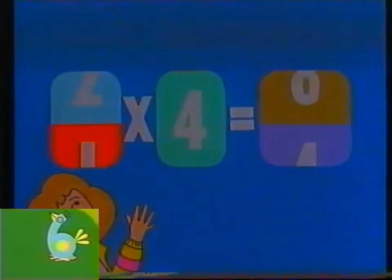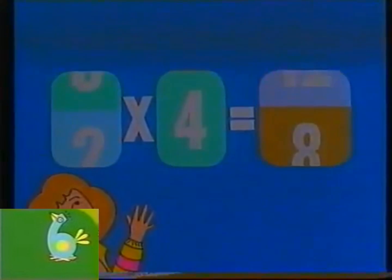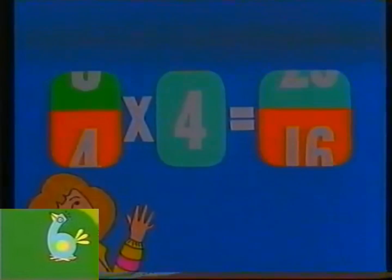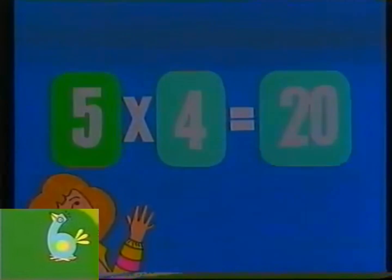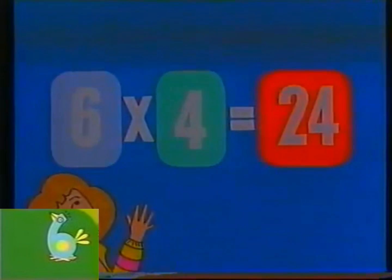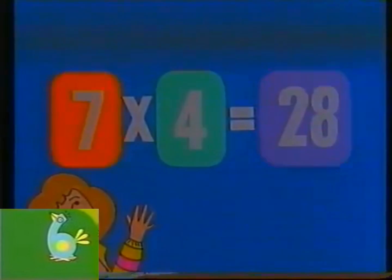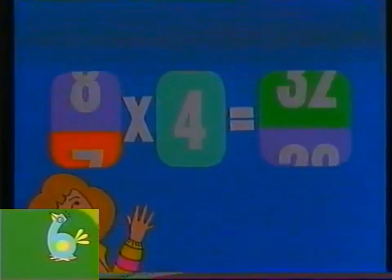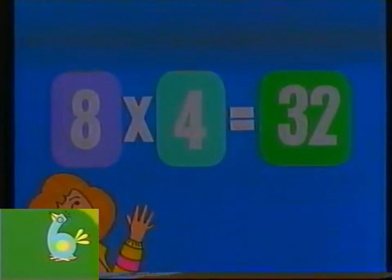Two times four is eight. Three times four is twelve. Four times four is sixteen. Five times four is twenty. Six times four is twenty-four. Seven times four is twenty-eight. Eight times four is thirty-two.